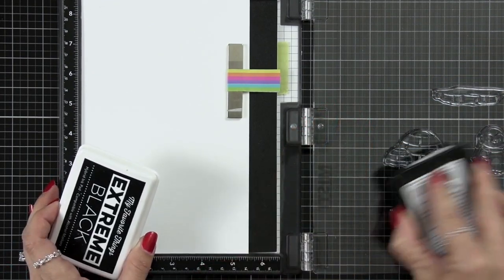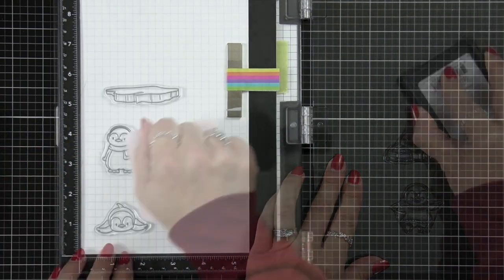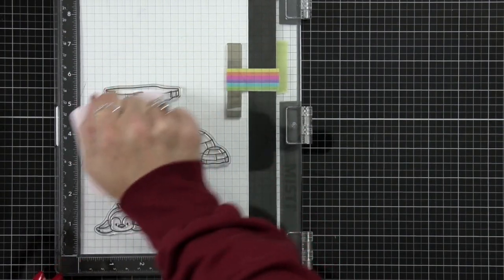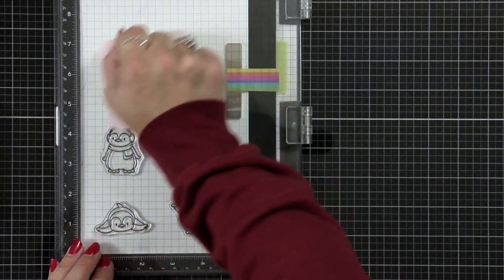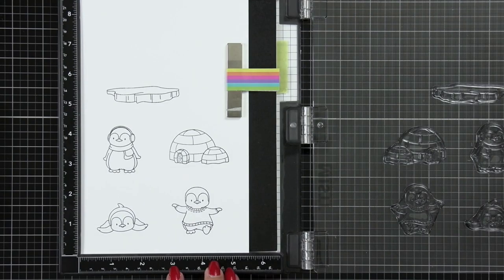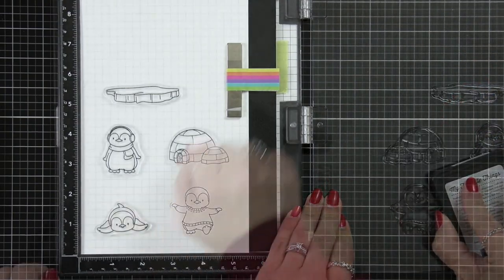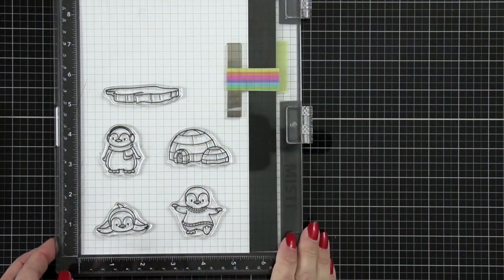Then I'm going to come in and ink them up with the My Favorite Things extreme black ink and stamp this down onto the cardstock. Now this is going to give me a really great impression especially for stamping it for the first time but since I have them in my Misti I'm going to go ahead and ink them up once again and get an even better impression.